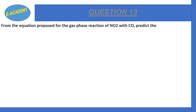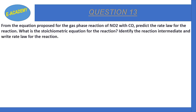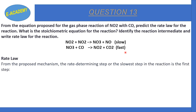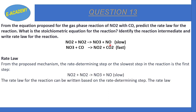Question number 13: From the mechanism proposed for the gas-phase reaction of NO₂ with CO, predict the rate law. The mechanism has a slow step: 2NO₂ → NO₃ + NO, and a fast step: NO₃ + CO → NO₂ + CO₂. The rate law is determined from the slow step, giving: Rate = k[NO₂]².